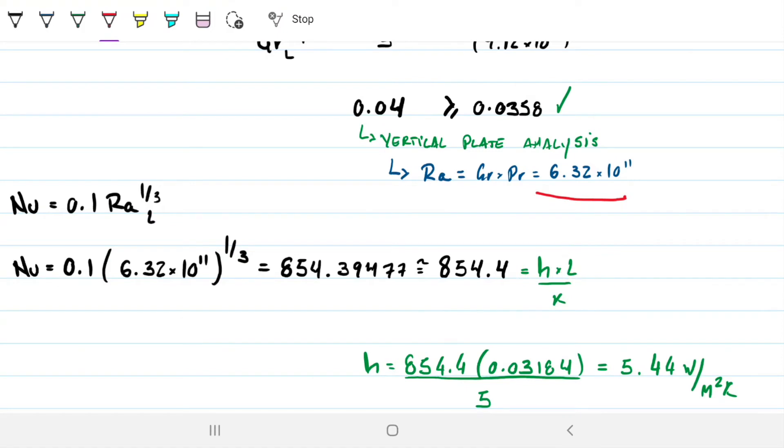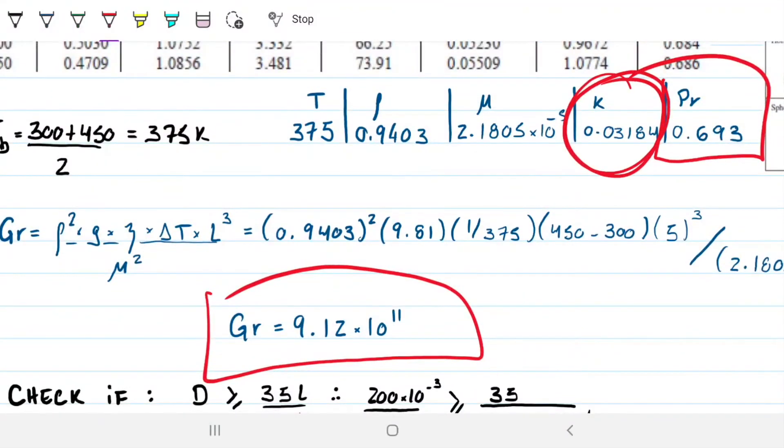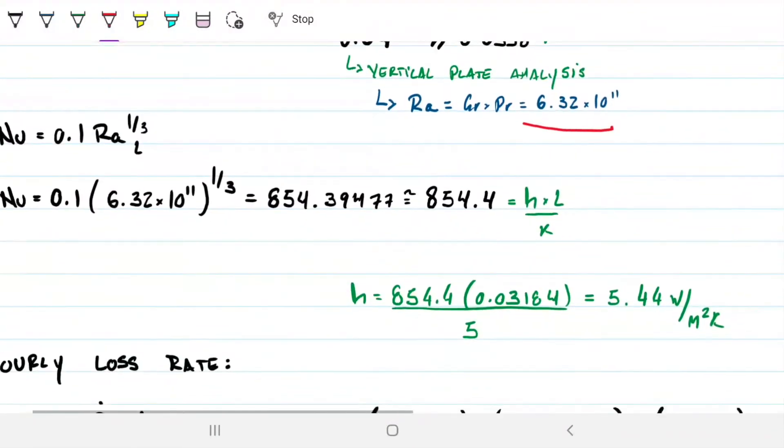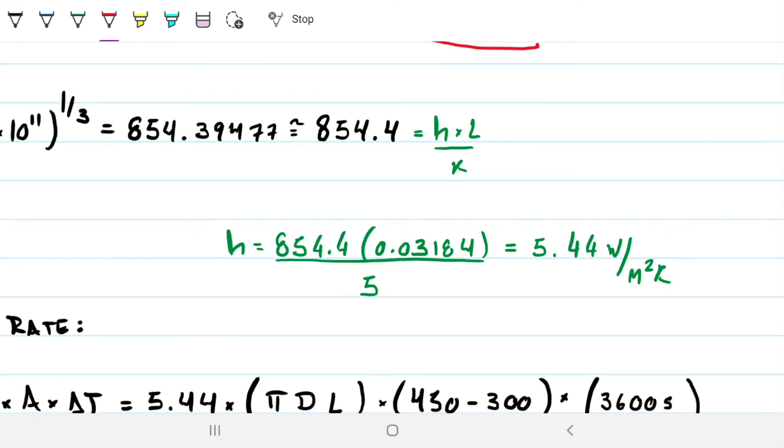We notice that 6×10^11 falls right here, between 10 and 13, which means that my correlation will be this one here. So it's going to be 0.1 of Rayleigh of L, again, substitute L, watch out for that, and L being the height of the vertical plate, in this case of the cylinder, to the one-third. So Nusselt correlation 0.1, Rayleigh to the one-third, Rayleigh had calculated just before, here it is, I just plugged it in there, and I got this number, which could be approximated to 854.4.